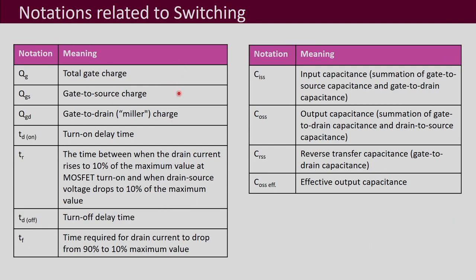Notations related to switching will also be provided in the datasheet — we have discussed these before. For completeness: gate charge Q_G, gate-to-source charge Q_GS, gate-to-drain Miller charge Q_GD, turn-on delay, rise time T_R, turn-off delay, and fall time T_F during turn-off — those will all be provided in the datasheets. Your input capacitance C_ISS will be provided, output capacitance C_OSS, and reverse transfer capacitance C_GD will also be provided.